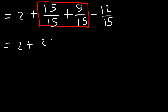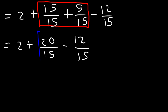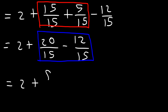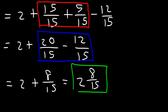Now 15 over 15 plus 5 over 15 is 20 over 15. Subtracting: 20 minus 12 is 8. So the final answer is 2 and 8 over 15. Now you know how to subtract mixed numbers. Thanks for watching.